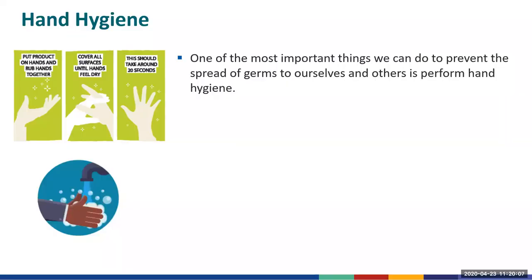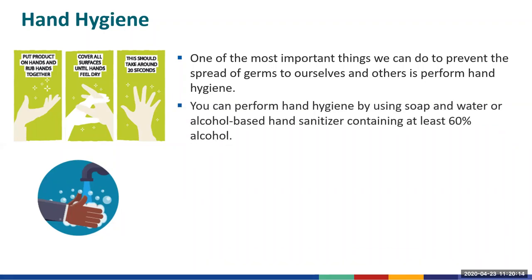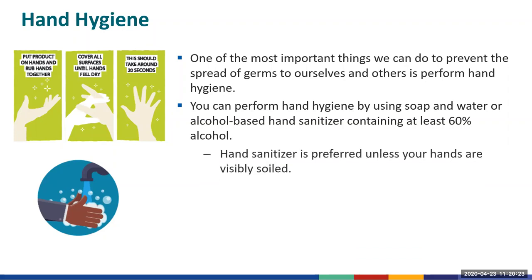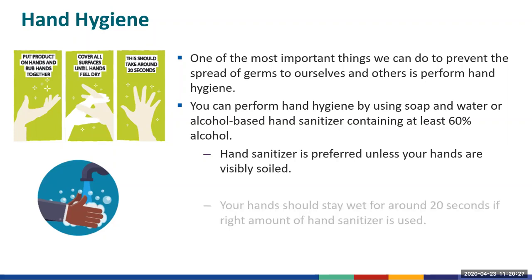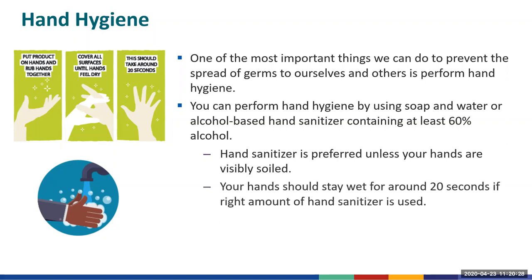One of the most important things we can do to prevent the spread of germs to ourselves and others is perform hand hygiene. You can perform hand hygiene by using either soap and water or alcohol-based hand sanitizer containing at least 60% alcohol. Hand sanitizer is preferred unless your hands are visibly soiled. Using the right amount of hand sanitizer should allow your hands to stay wet for around 20 seconds.